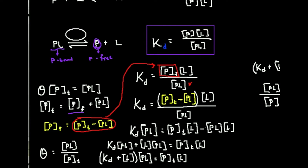I'm going to multiply both sides by the concentration of PL, which cancels on the right side, leaving KD times the concentration of PL equal to — foiling this out — total protein concentration times the ligand concentration, minus PL concentration times the ligand concentration. Then I add the PL times L term to the other side: KD times PL plus L times PL equals total protein concentration times L. Both terms on the left have PL, so I factor it out: PL times the sum of KD plus L equals total protein concentration times L.